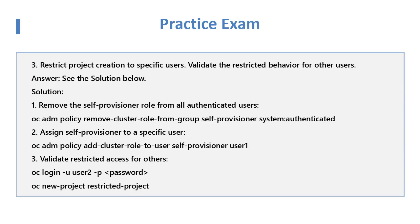Question 3: Restrict project creation to specific users and validate the restricted behavior for other users. Solution: Remove the Self-Provisioner role from all authenticated users using 'oc adm policy remove-cluster-role-from-group self-provisioner system:authenticated'. Assign Self-Provisioner to a specific user with 'oc adm policy add-cluster-role-to-user self-provisioner user1'. Validate restricted access for others with 'oc login -u user2' and attempt 'oc new-project restricted-project'.